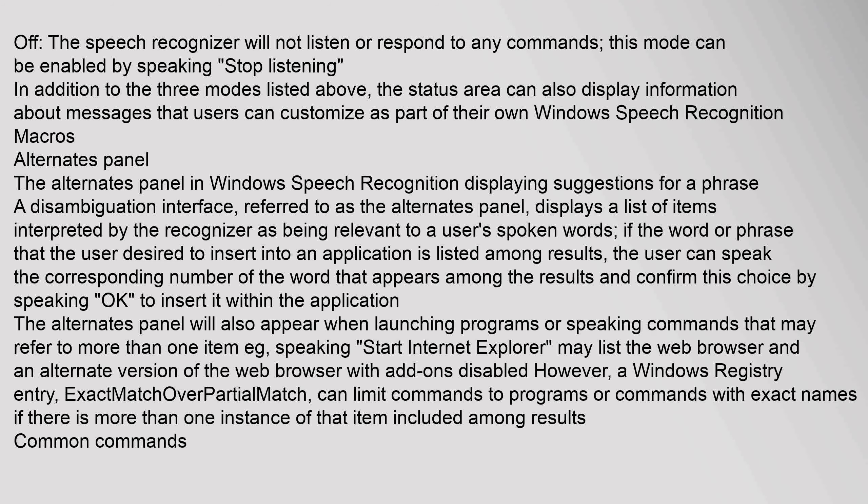The alternates panel in Windows Speech Recognition displays suggestions for a phrase. A disambiguation interface, referred to as the alternates panel, displays a list of items interpreted by the recognizer as being relevant to a user's spoken words. If the desired word or phrase is listed among results, the user can speak the corresponding number and confirm by speaking 'ok' to insert it within the application. The alternates panel will also appear when launching programs or speaking commands that may refer to more than one item. A Windows registry entry, 'exactmatchoverpartialmatch', can limit commands to programs or commands with exact names.